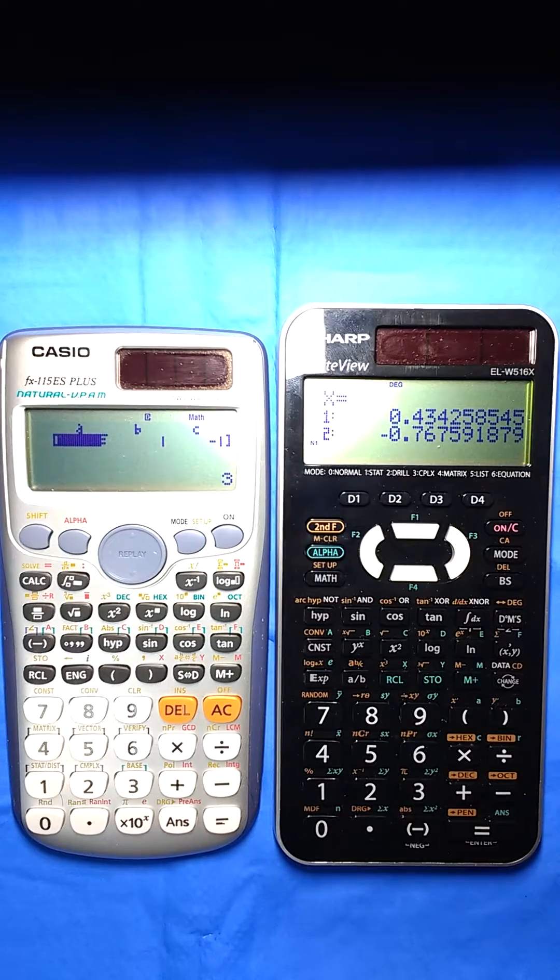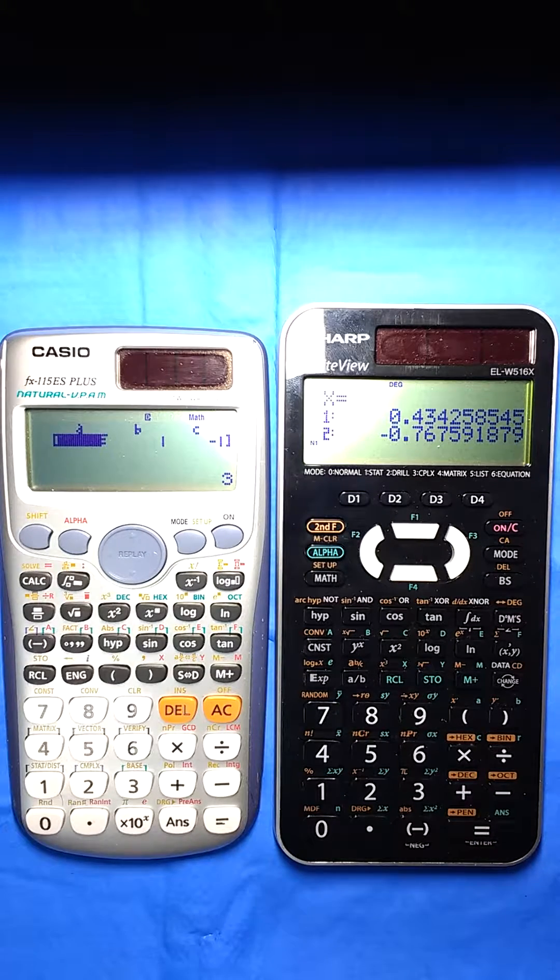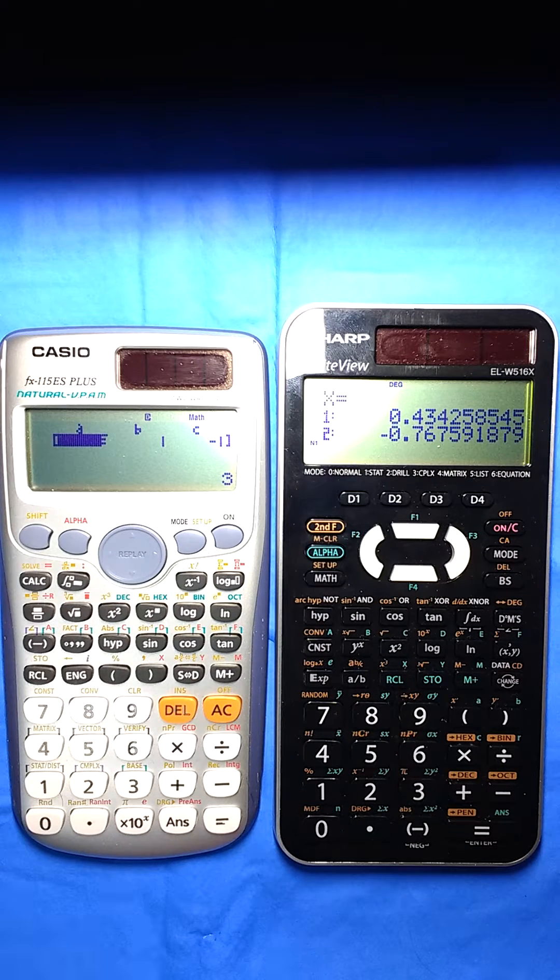And it gives me my two same roots, but there is no exact answer given. It's just a decimal. So not as handy for checking your work if you have to show an exact answer.